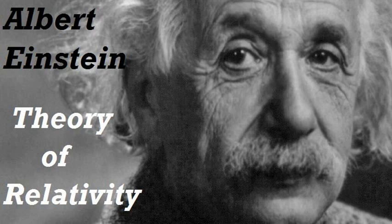We are now in a position to replace the provisional formulation of the general principle of relativity, given in Section 18, by an exact formulation. The form there used — all bodies of reference K, K', etc., are equivalent for the description of natural phenomena, or formulation of the general laws of nature, whatever may be their state of motion — cannot be maintained, because the use of rigid reference bodies, in the sense of the method followed in the special theory of relativity, is in general not possible in space-time description. The Gauss coordinate system has to take the place of the body of reference. All Gaussian coordinate systems are essentially equivalent for the formulation of the general laws of nature.